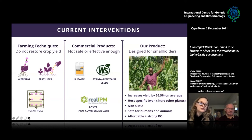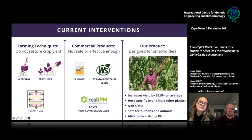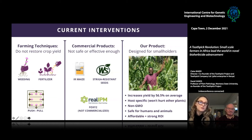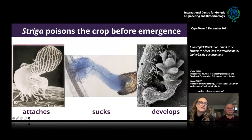Push-pull is a technology promoted for over a decade but hasn't been well adopted. Imazapyr-resistant maize seeds are currently promoted in Kenya but hold less than four percent of the market, and they have to be distributed with gloves — farmers are wary because they're not comfortable with what they consider a toxic chemical. There's also Foxy Too, which used Fusarium oxysporum without virulence enhancement and wasn't effective enough to be commercialized.